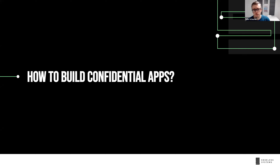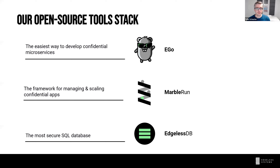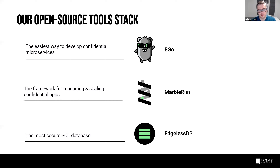That was the first part — the overview of confidential computing. No questions so far, so let's talk about how to build confidential apps and how to program hardware like Intel SGX. Our company builds different tools to make it easy to use this new paradigm. The first is called EGo, which is the main focus for the remainder of this talk.